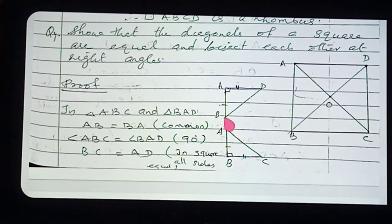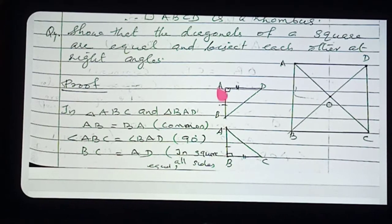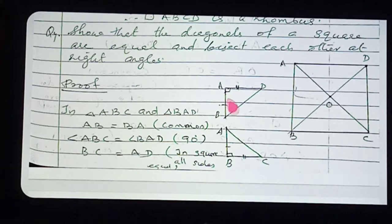In triangle ABC and triangle BAD: AB and BA — what is coming? The common part. First point obtained. Angle ABC is 90 degrees, angle BAD is 90 degrees, so angle ABC equals angle BAD. Second part obtained. And BC and AD — opposite sides of the square. All sides of the square are equal, so BC equals AD. Third part obtained.